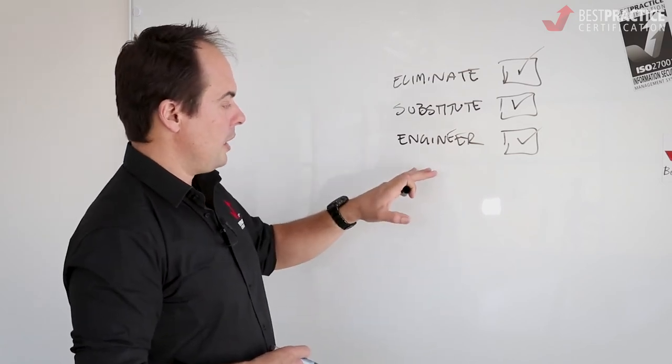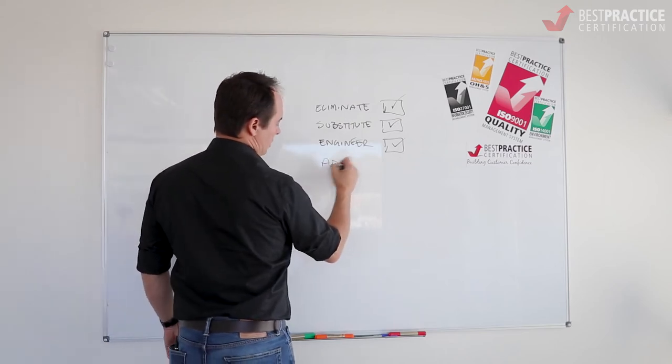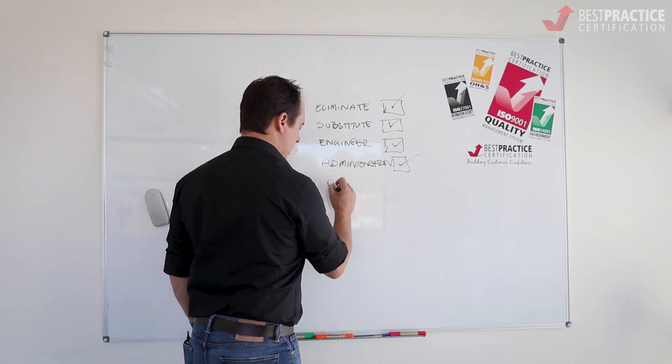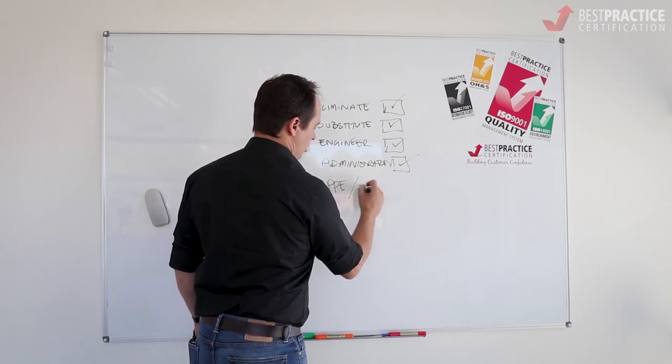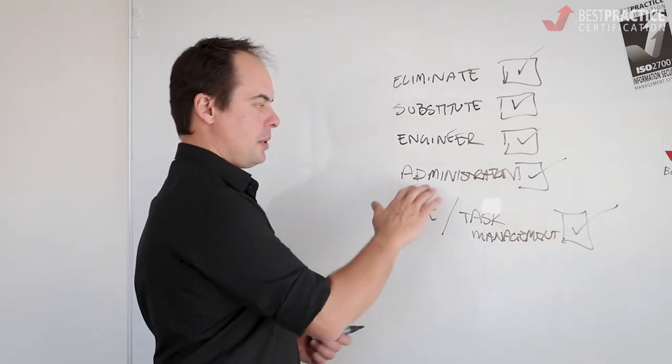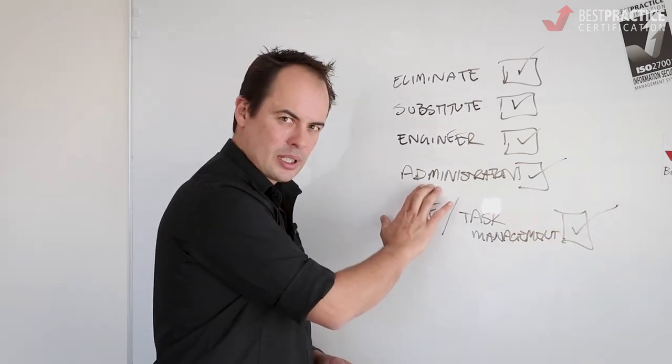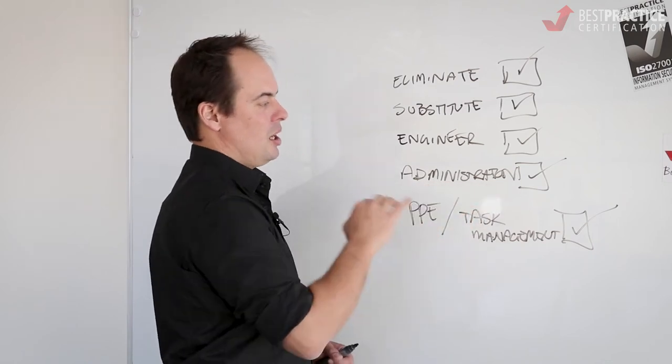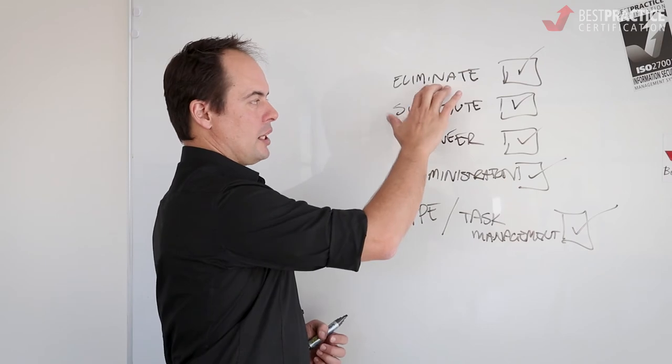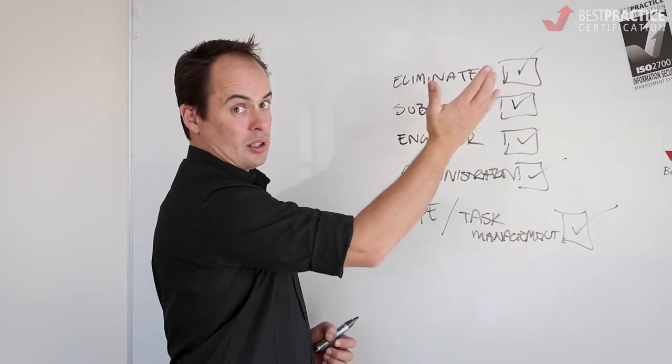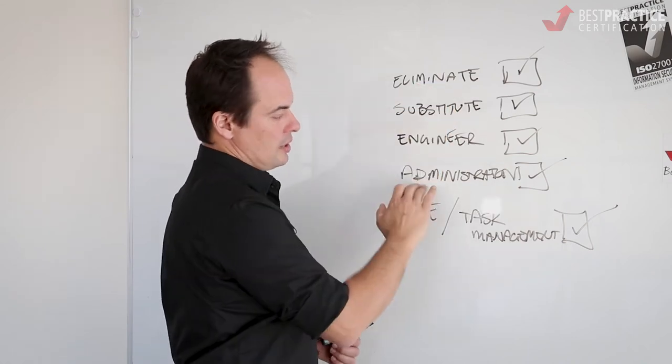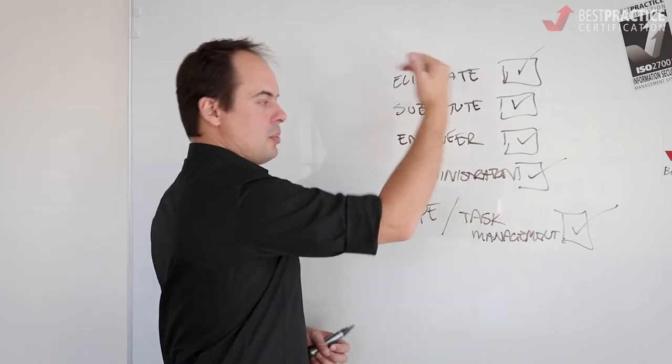Now we start to talk about administration. We talk in the last step about personal protective equipment or we talk about task management. So that's our last option. So when we're talking about administration, we're talking about policies and procedures. We're talking about signage, the sorts of things that people can ignore. So it's difficult to ignore the risk. If we've eliminated it, it's just not going to happen. But if you put a sign up and it says it's dangerous, then it's still, this is less effective than this. So it's about effectiveness.